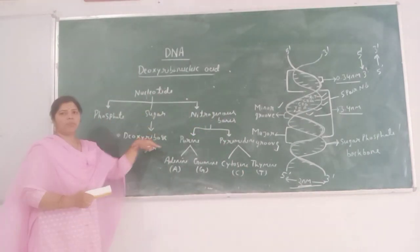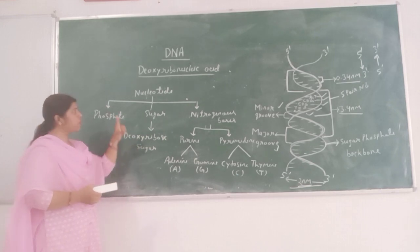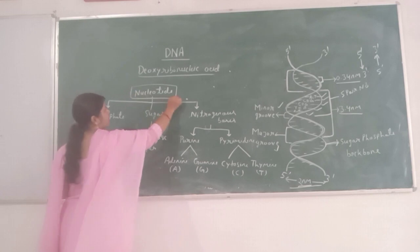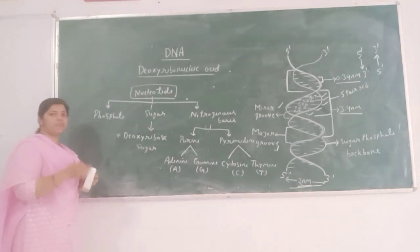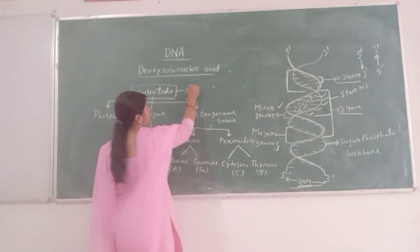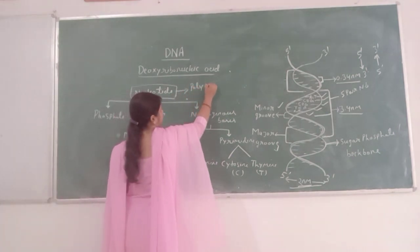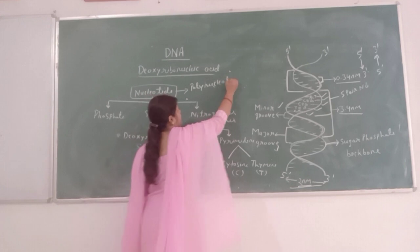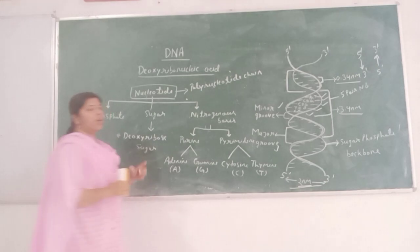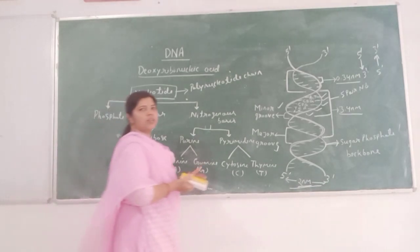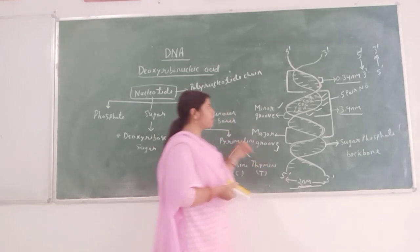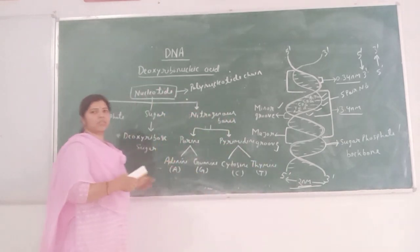All these components are joined together to form one nucleotide structure. This is a single nucleotide. Multiple nucleotides are joined together to form a polynucleotide chain. Two polynucleotide chains are joined together to form the DNA structure. DNA has a helix-like structure.